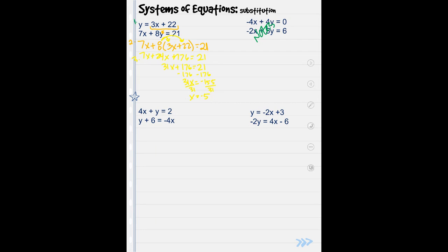That was step number three when I solved for my x. Now, step number four. I'm going to take that x and I'm going to put it into one of my original equations for x. I'm going to choose this first one so that I can solve for y easily because it's by itself. So y equals 3, instead of x I'm putting in negative 5 plus 22. Do the math. y equals 7.